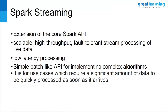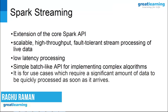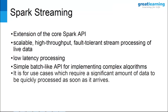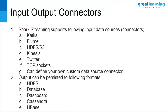What is Spark Streaming? It is an extension of the core Spark API. It is scalable, high throughput, low latency processing with a simple batch-like API for implementing complex algorithms. It is for use cases which require a significant amount of data to be quickly processed. Now, there is something called data sources and outputs — meaning if I'm creating a Spark Streaming application, from where will I get the data?